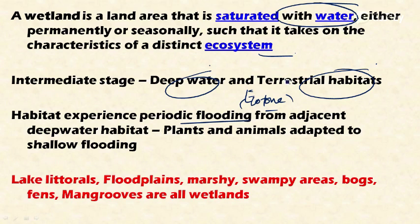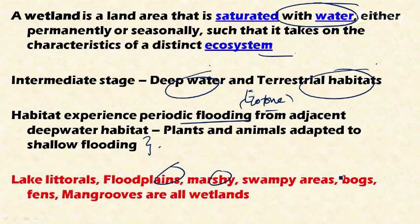This periodic flooding and waterlogging condition provides habitat for a distinct kind of plant and animal species adapted to shallow flooding. Important wetlands include lake littorals, floodplains, marshes, swamps, bogs, fens, mangroves, and coral reefs.